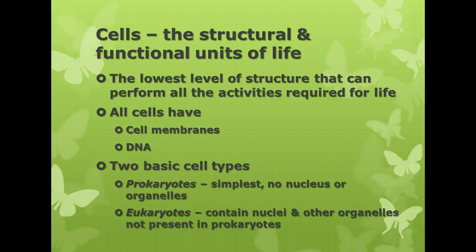The second basic cell type is a eukaryote. Eukaryotes are cells that contain nuclei and other organelles not found in prokaryotes. Many terms in biology come from Latin or Greek words. The 'karyote' part means nucleus; 'pro' means before or earlier; 'eu' means true. So prokaryotes developed before there was such a thing as a nucleus, while eukaryotes have a true nucleus as well as other organelles.